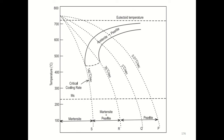For cooling rates between 35 and 140°C/second, the cooling curve crosses the pearlite start curve but does not reach the pearlite finish curve. As a result, only a portion of the austenite transforms to pearlite, a small portion transforms to bainite, and the remaining austenite transforms to martensite upon crossing the Ms line.